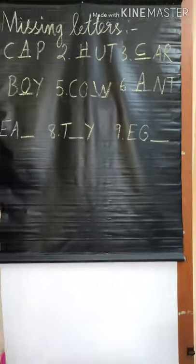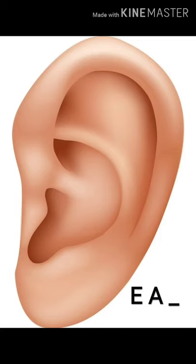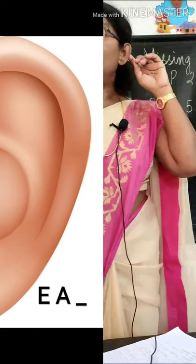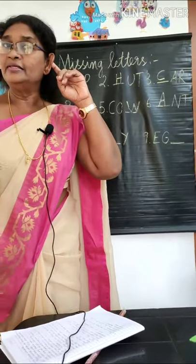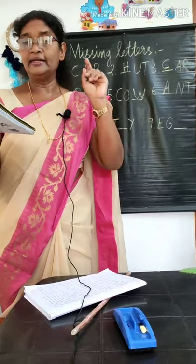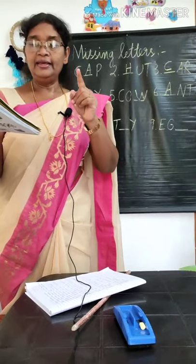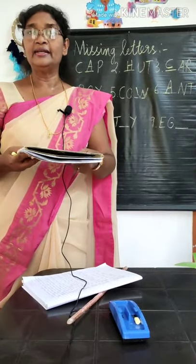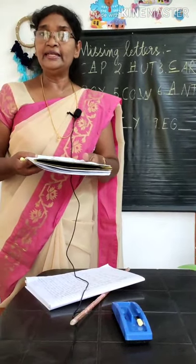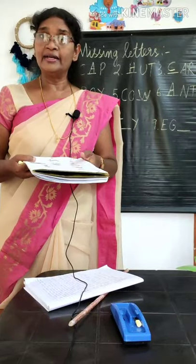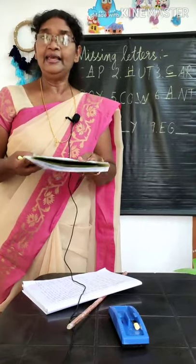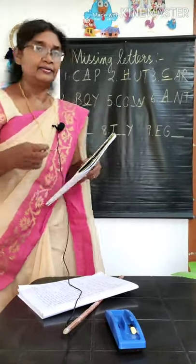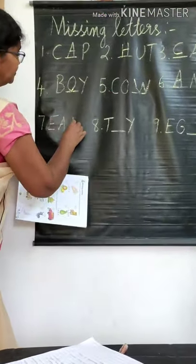Seventh one is EAR. E, A, dash. Which is the missing letter there? R. E, A, R — write R.